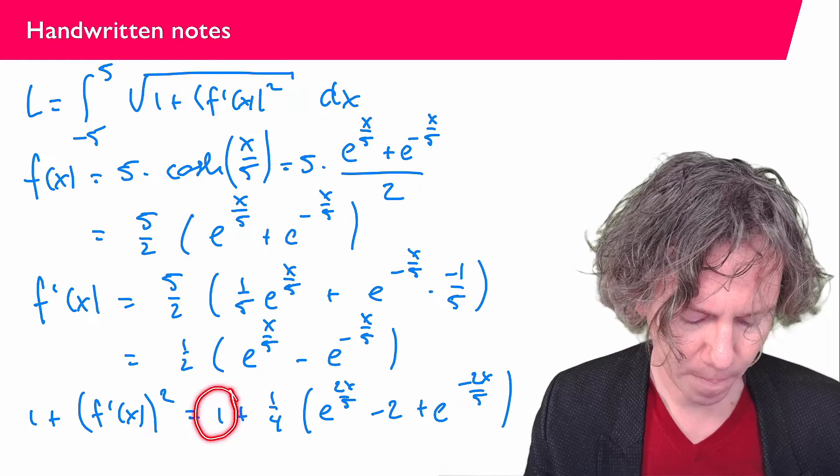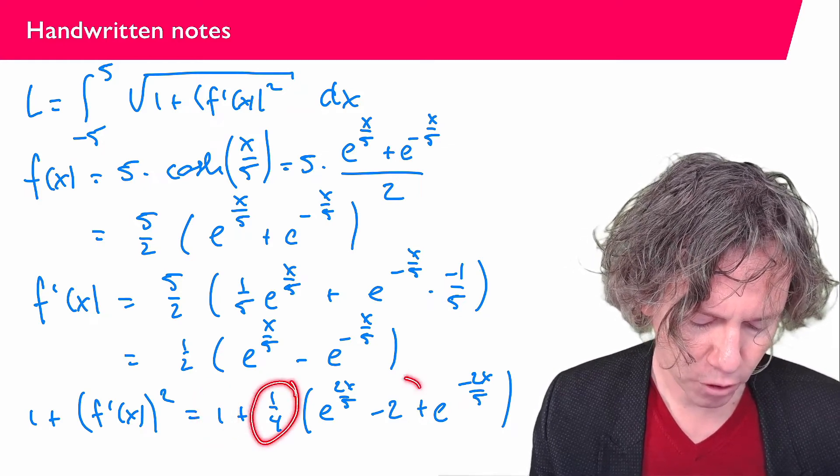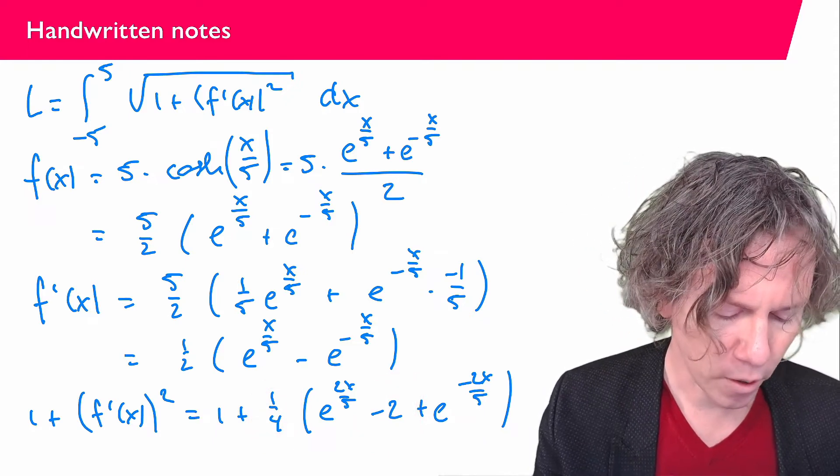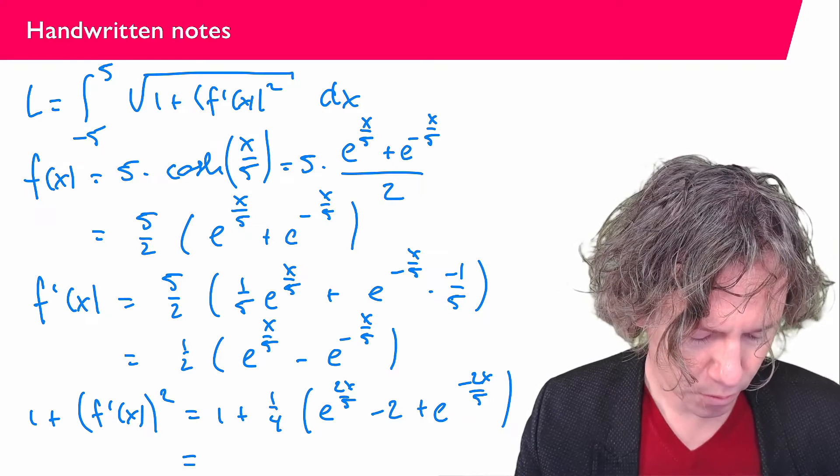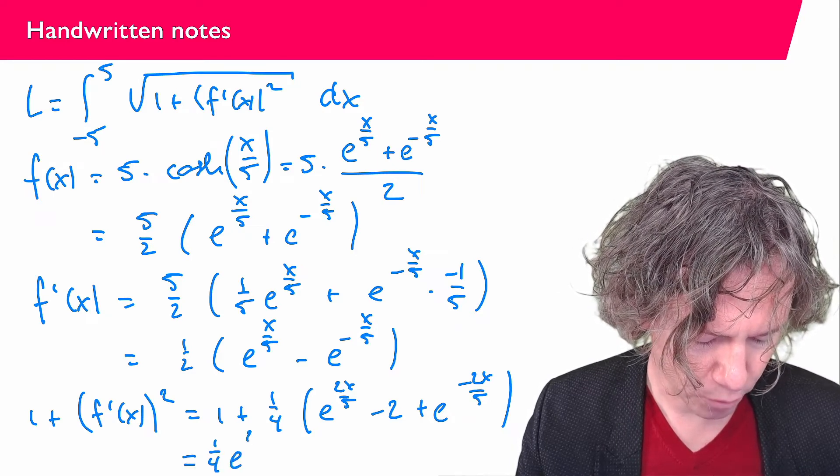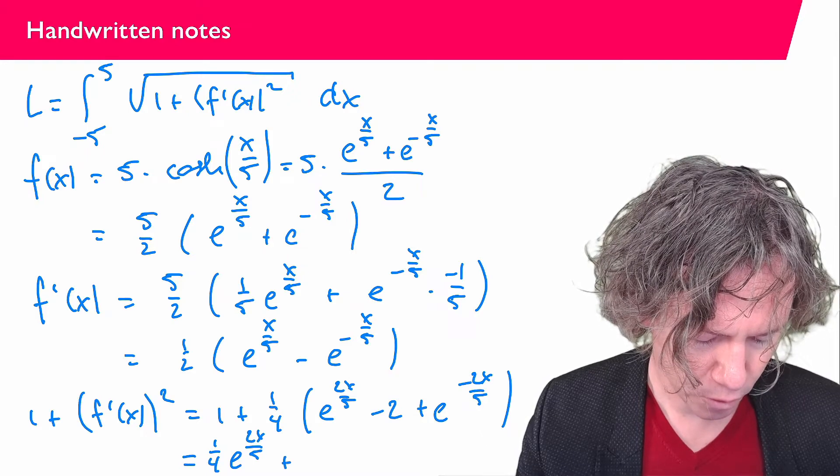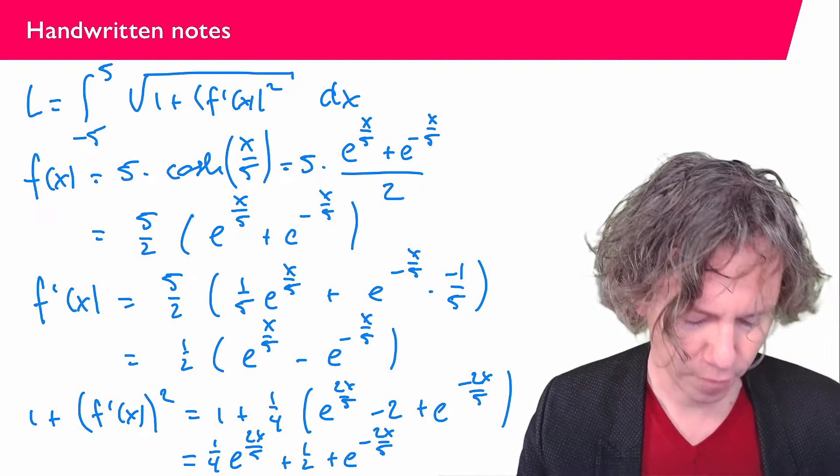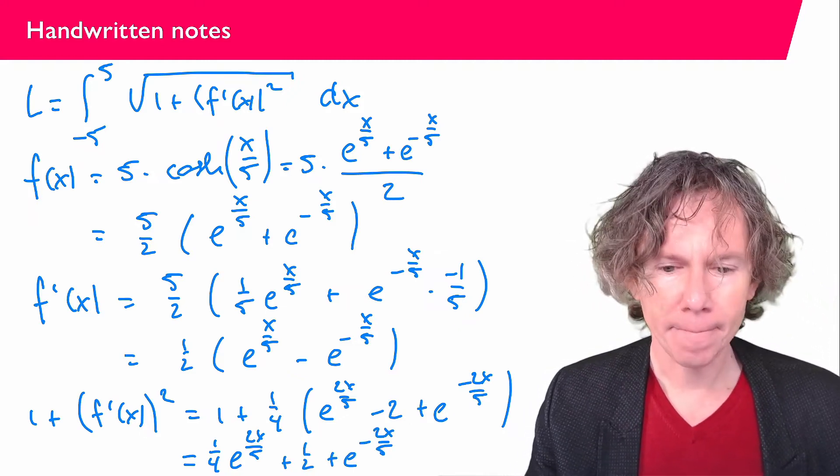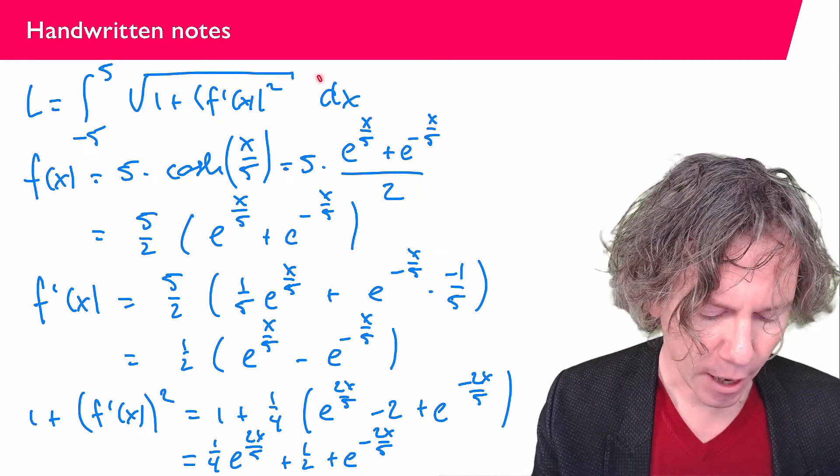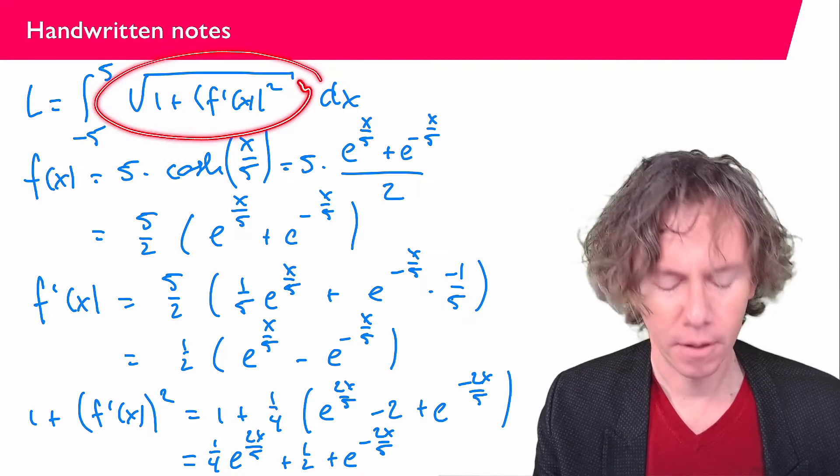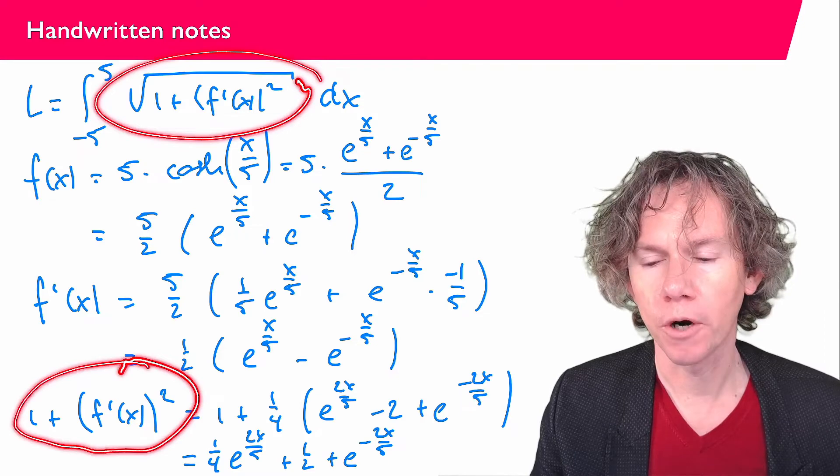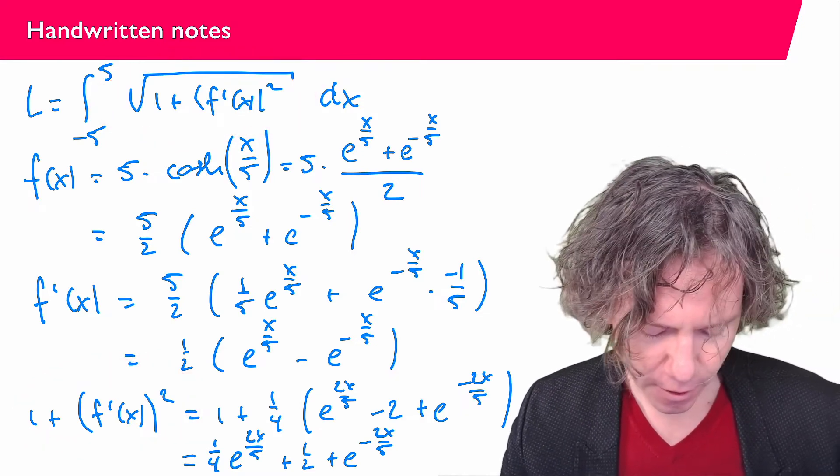And now something interesting happens. Here I have a 1, and here I have 1 over 4 times minus 2, which is minus 1 half. So I can write the whole thing as 1 over 4 e to the power 2x over 5 plus 1 half plus e to the power minus 2x over 5. In the integral I want to take the square root of this whole thing. So I want to compute the square root of 1 plus f prime squared.